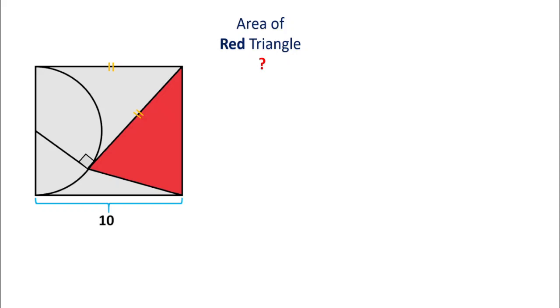Hello everyone, welcome to Definite Mind. In this figure, there is a square with a semicircle and triangle inscribed, and we have to find the area of this red triangle. I recommend you solve this yourself first, then watch the solution completely.